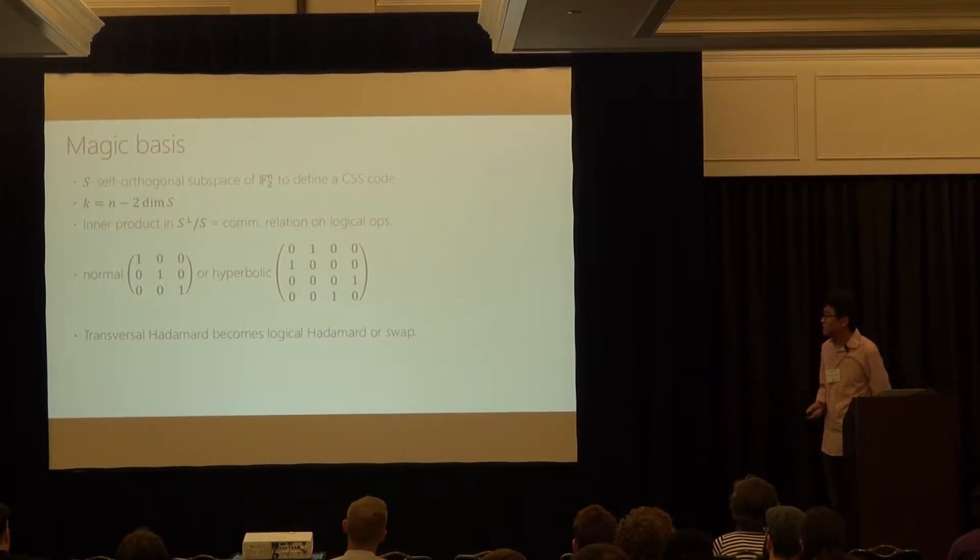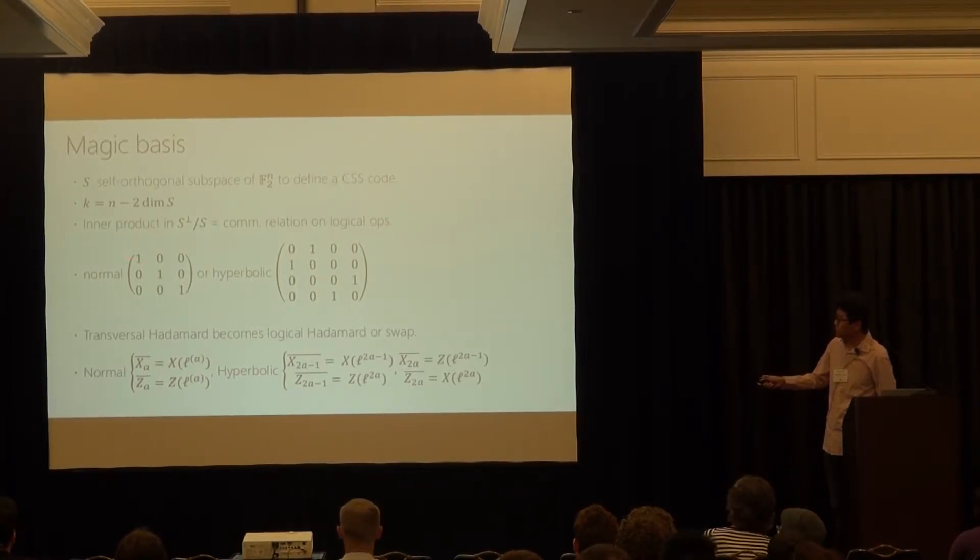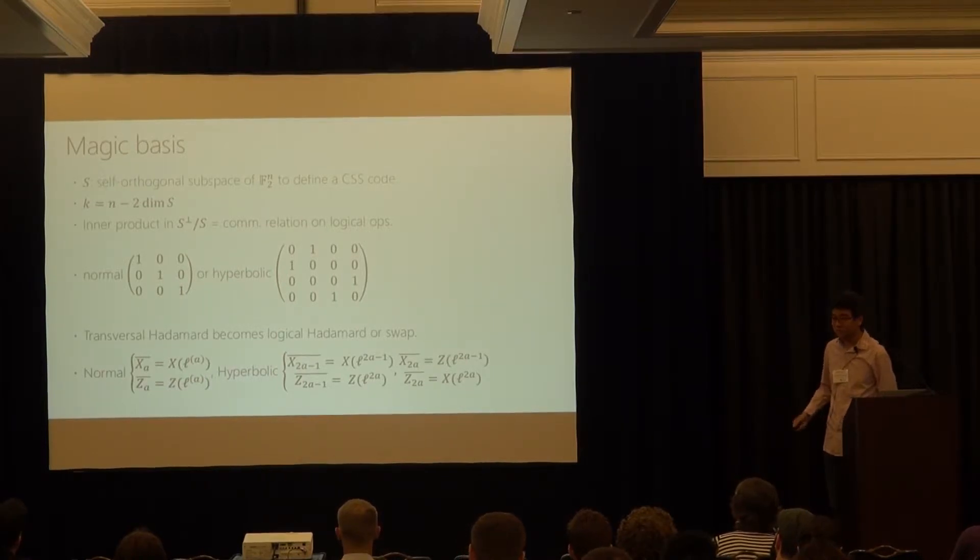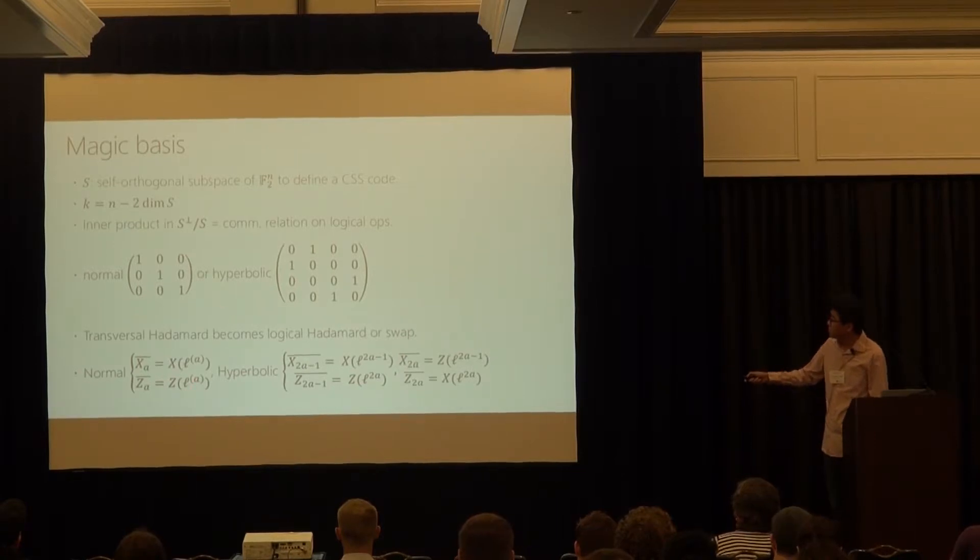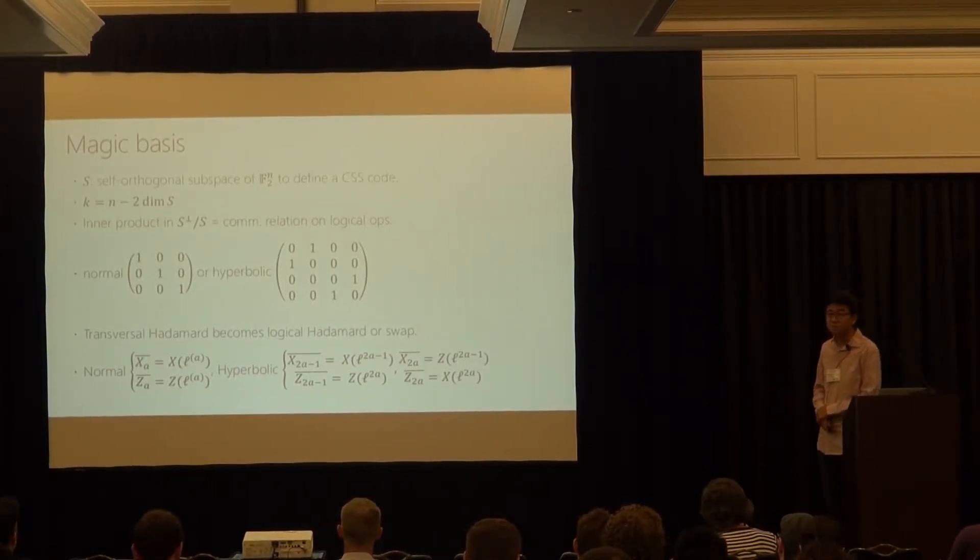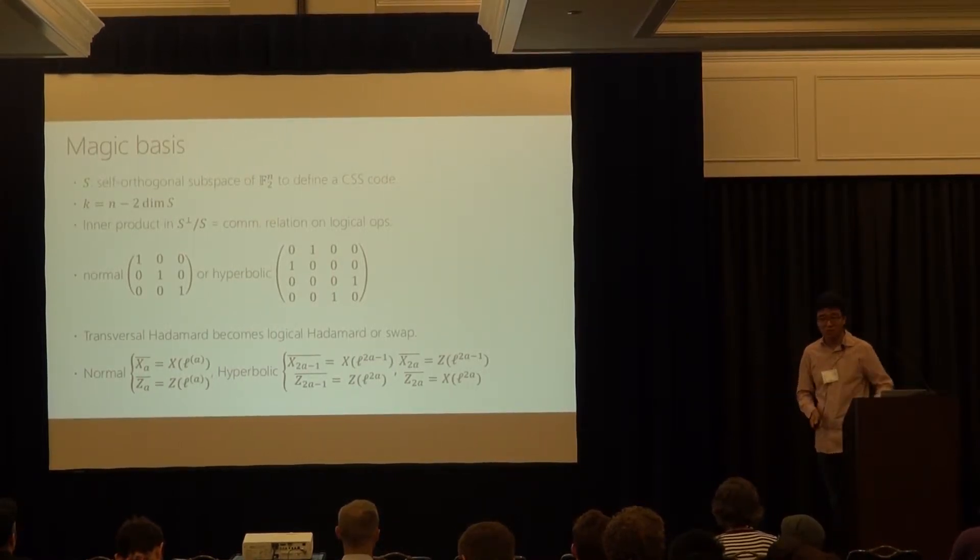And the inner product in this quotient space is always symmetric and you can actually classify the symmetric forms over the binary field. And there are only two choices. One is I call normal. And the other is called hyperbolic, where you can bring the matrix representation of your inner product into a completely diagonal form or block diagonal form. The proof is just another application of Gram Schmidt process. And in the first case, the transversal Hadamard becomes logical Hadamard, by choosing logical operators in this way, you just call my X logical operators is associated with the first basis element. And the Z logical operators is also associated with the first basis element, but with the X or Z products of Pauli matrices. The commutation relation is guaranteed by this orthogonal inner product form in the hyperbolic case.